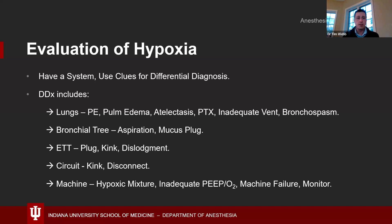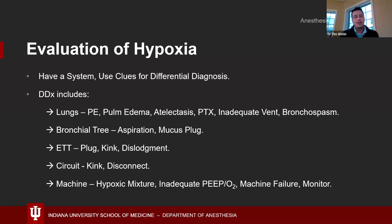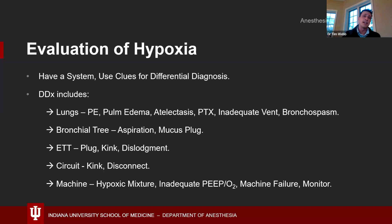The next topic worth discussing is the evaluation of hypoxia. In the anesthesia world, evaluating, recognizing, and treating hypoxia is critically important and needs to be done quickly. Make sure you have a system and use clues for a differential diagnosis — for example, if a patient has severe asthma and starts desaturating, bronchospasm should be high on your differential. If a patient is desaturating in the operating room, the first thing I do is turn the FiO2 up to buy a little extra time to evaluate why the sat is drifting down.